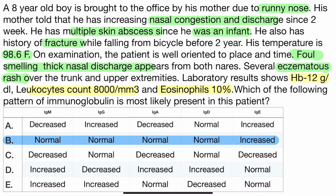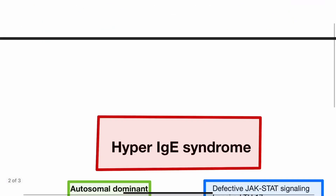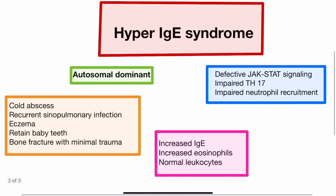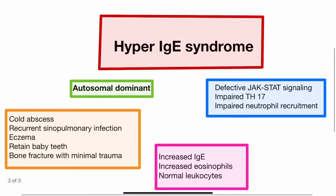To summarize: hyper-IgE syndrome presents with cold abscess, recurrent sinopulmonary infection, eczema, defective JAK-STAT signaling pathway, impaired neutrophil recruitment, increased IgE with all other immunoglobulins normal, increased eosinophils, and normal total leukocyte count.